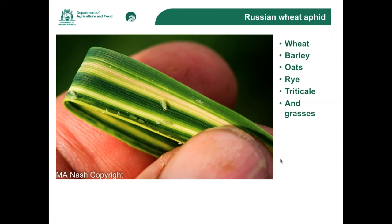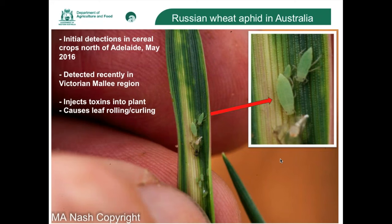As with the other cereal aphids we have, Russian wheat aphid only infests cereal crops and grasses — we don't have to worry about broadleaf plants. I mentioned that it injects toxins. Here's a closer look at the aphid. Those of you who know what oat and corn aphids look like will see how quite different it is. Firstly, you'll notice the lack of exhaust pipes or cornicles at the top of the back end, and it's quite pointy at the back.